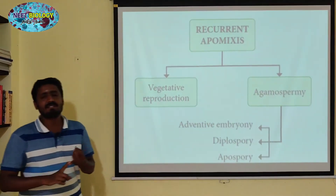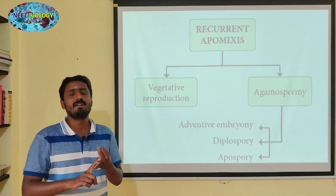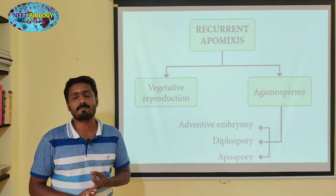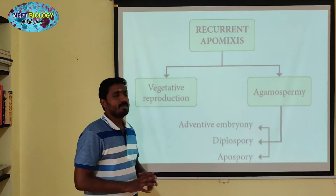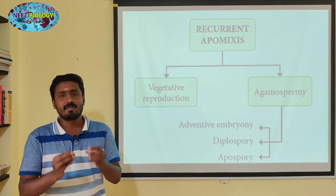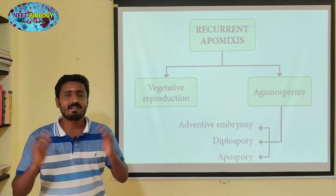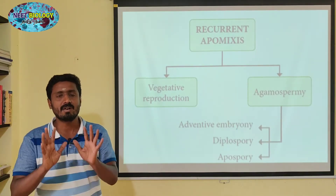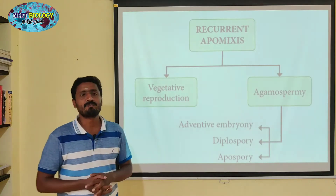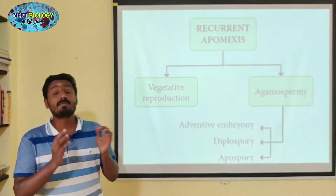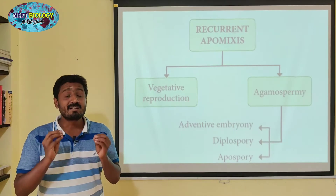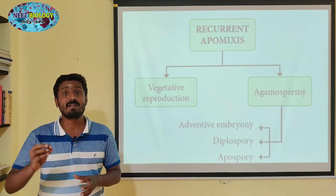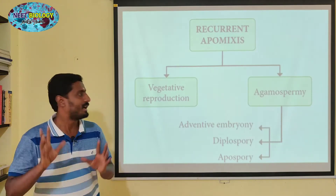A-gamospermia, total meiosis — at the same time, syngamy, fertilization, and embryo development. Diplospory involves mitotic division, producing a diploid cell and embryo. This is called diplospory.